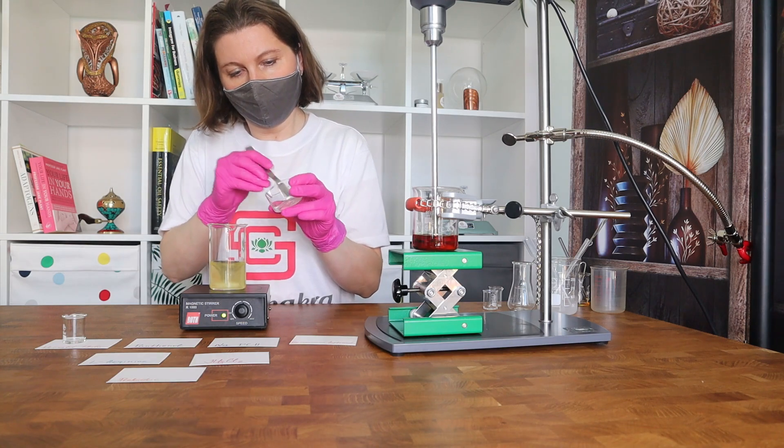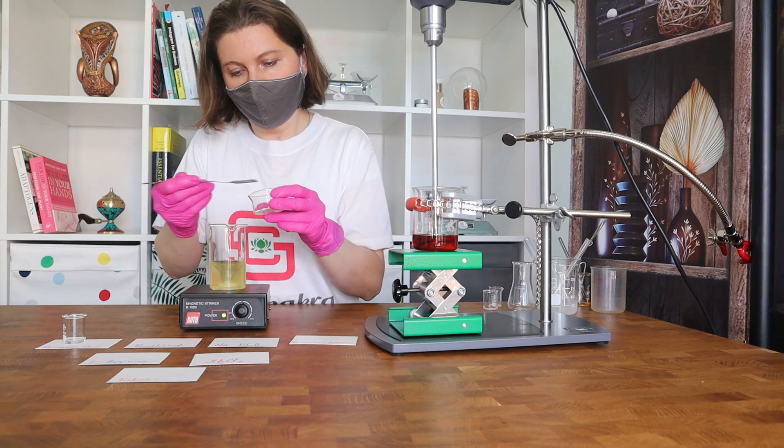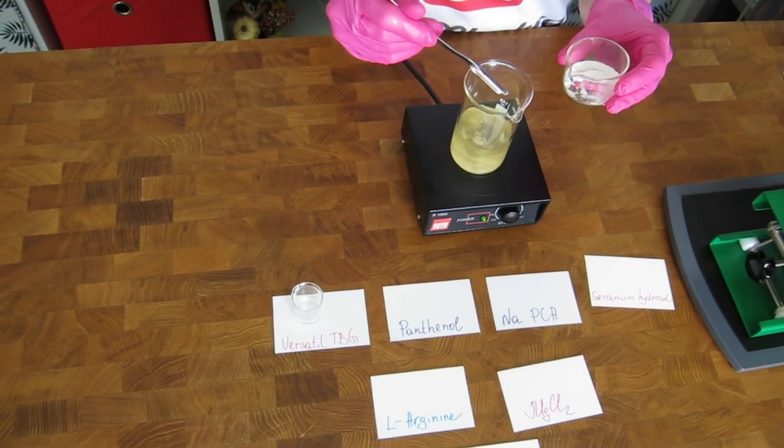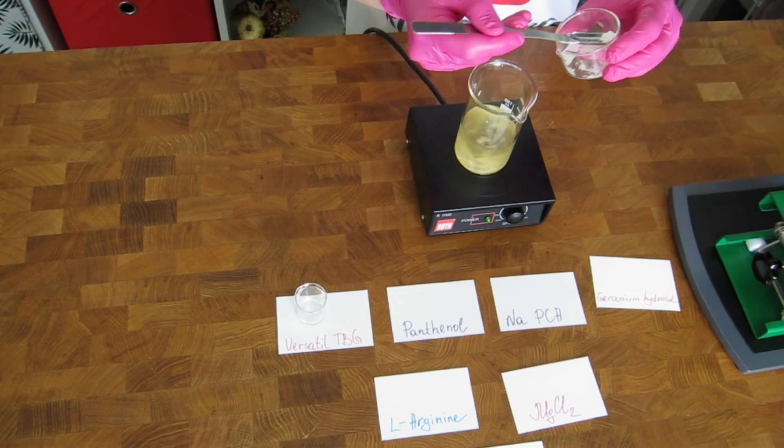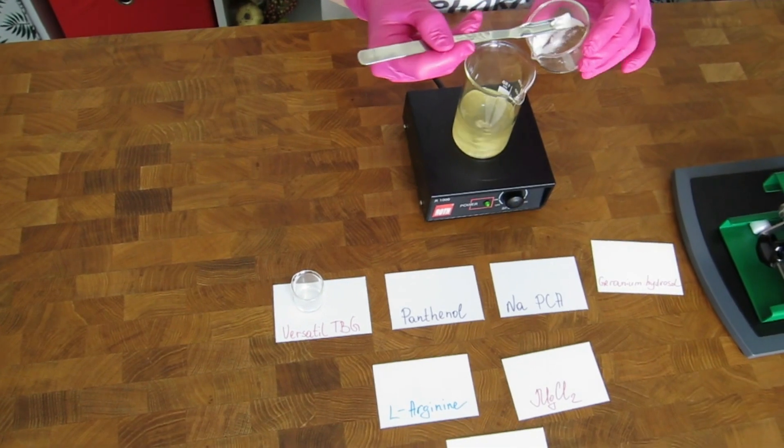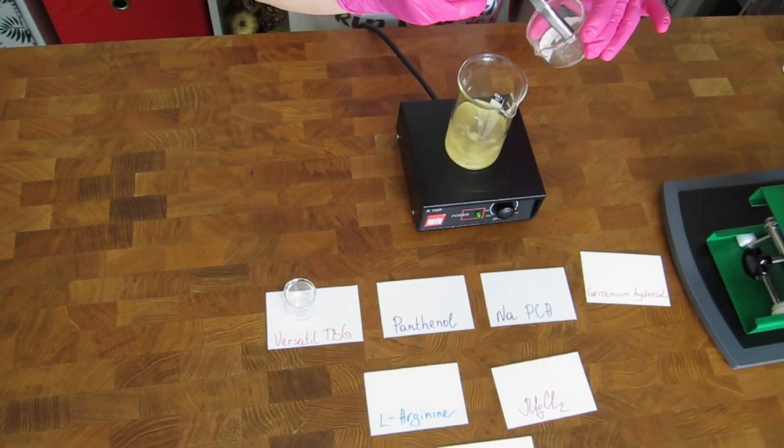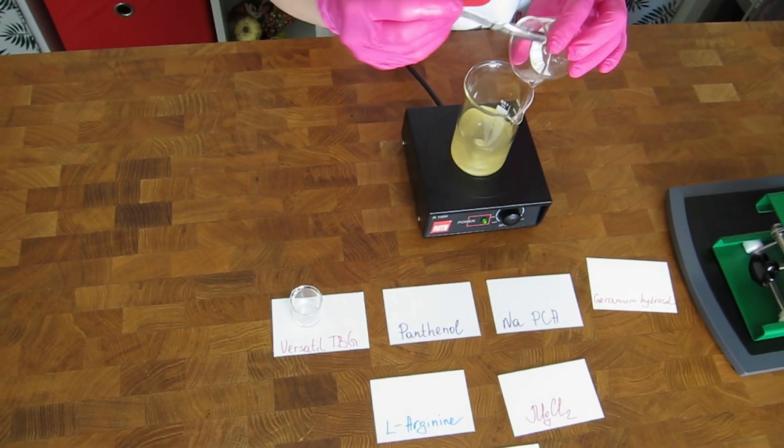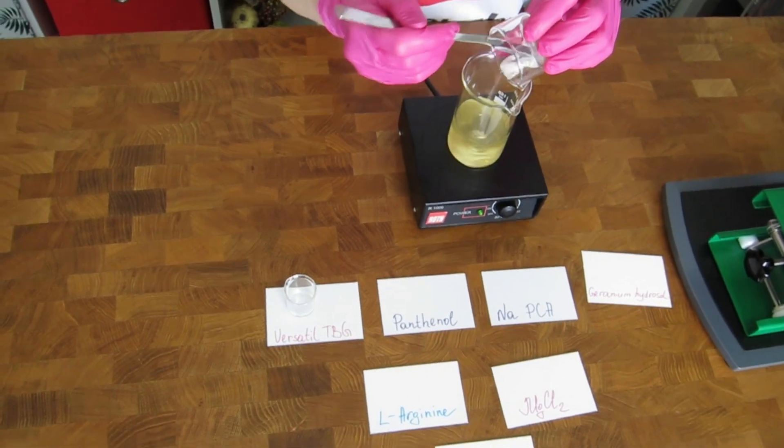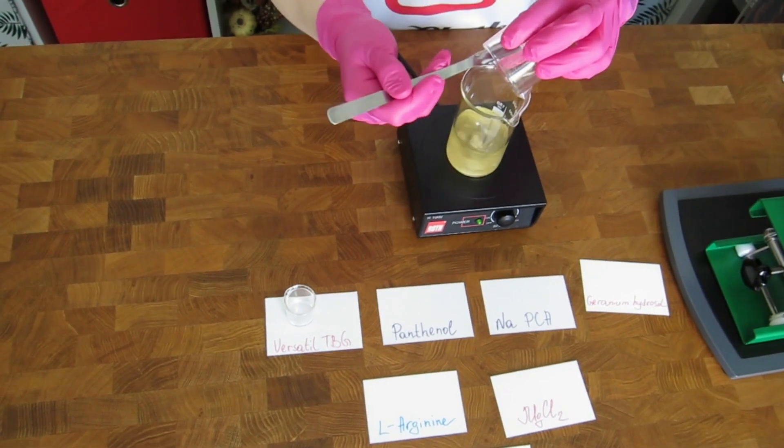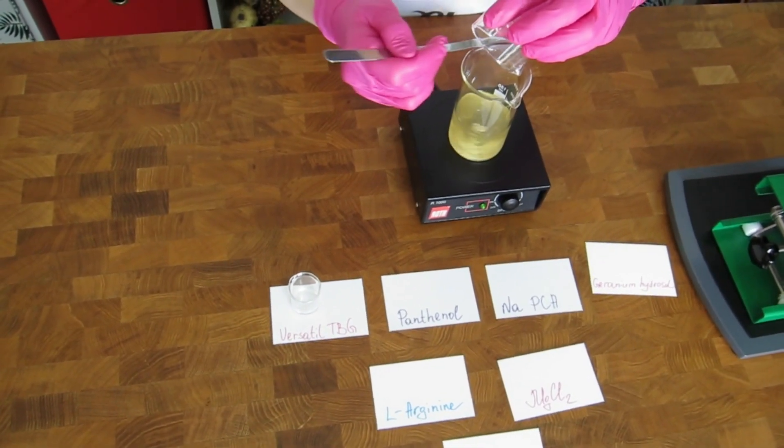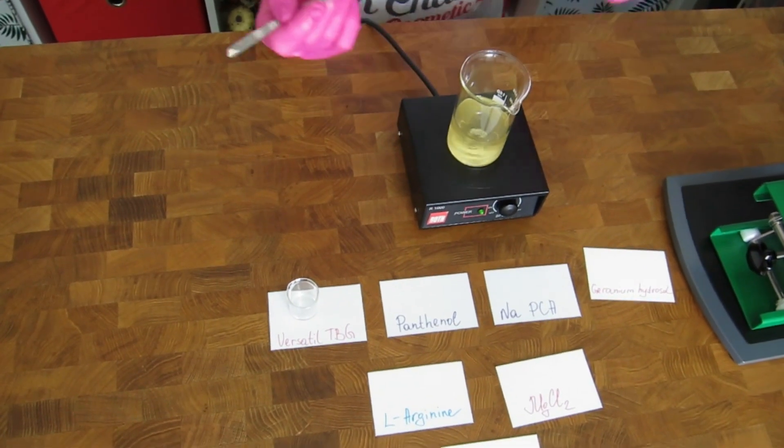For the water-in-oil emulsion, we need to measure and adjust the pH of the water phase before we blend the two phases and before we create the emulsion. At this stage, Svetlana blends all of the ingredients of the water phase and then we will prepare a 10% dilution and measure the pH.